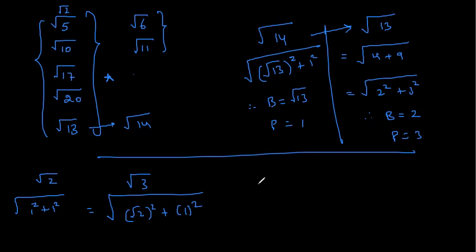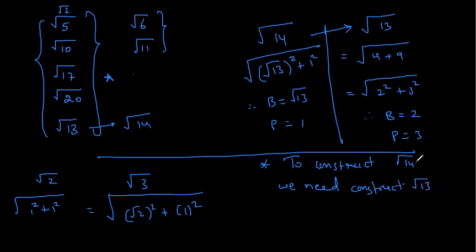Is this part clear? Yes, yes. So please write down this thing so that you recall what I said: to construct root 14, we need to construct root 13. Why I'm taking root 14? Because I have already done the construction just now. That's why I'm taking root 14 to construct. Otherwise I can make root 6 also, root 11 also I can do that. So quickly copy this thing, then I'll show the exact construction.